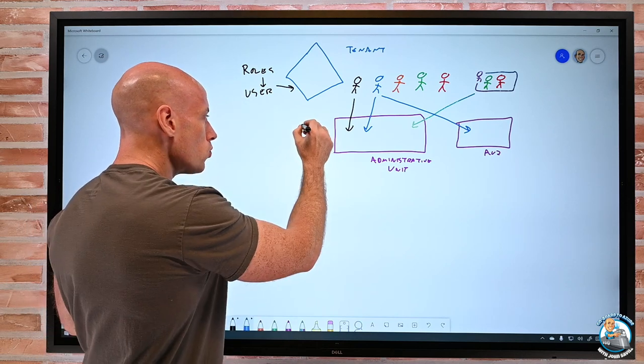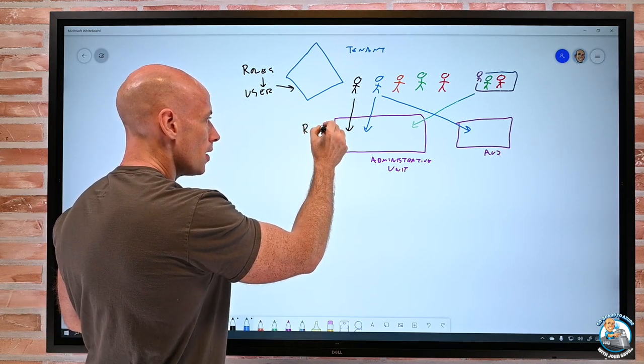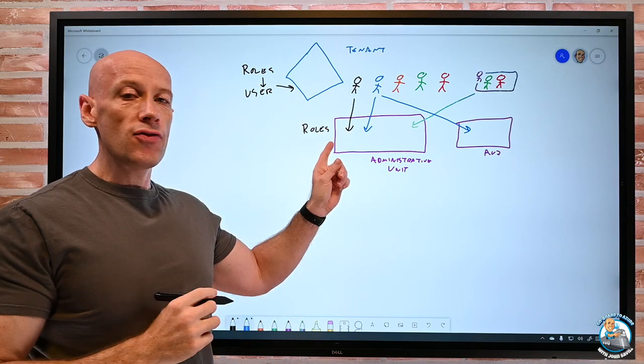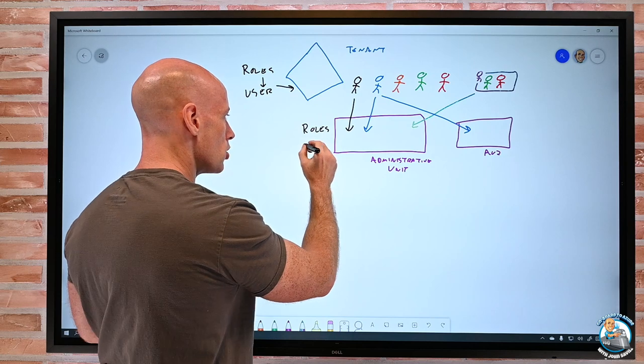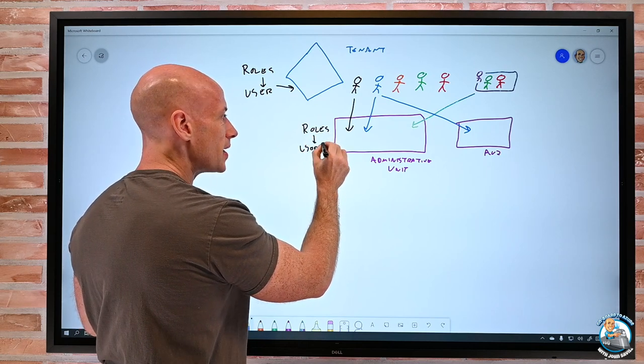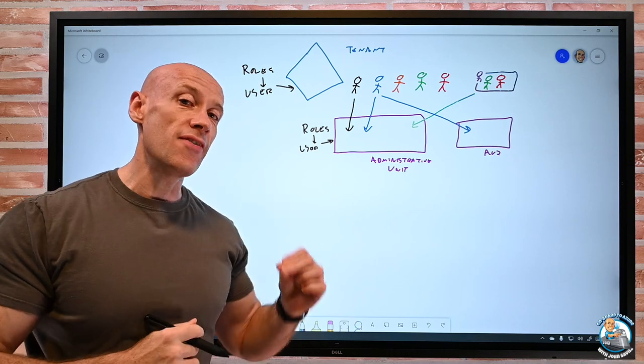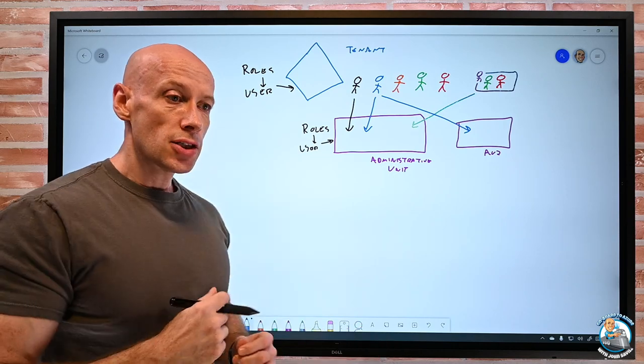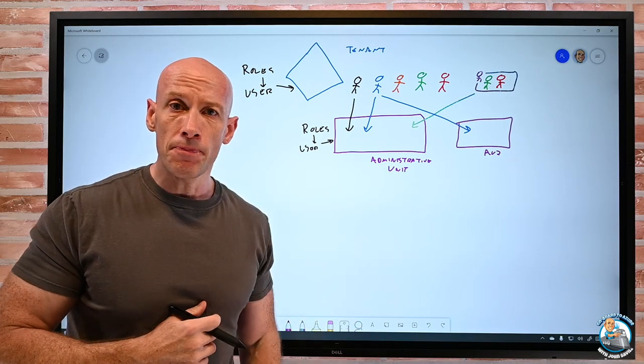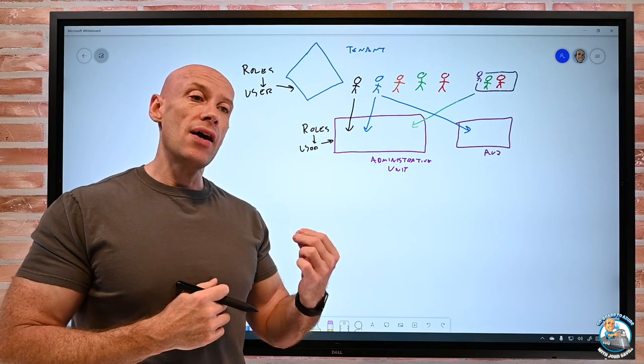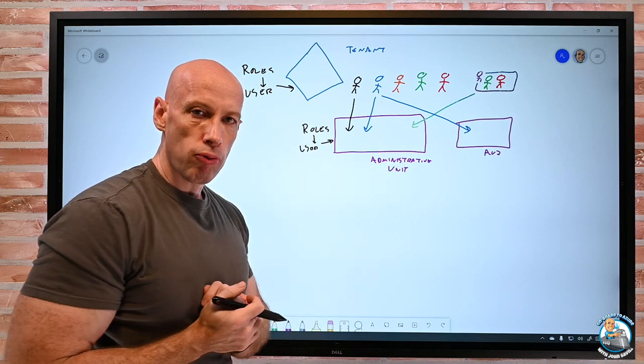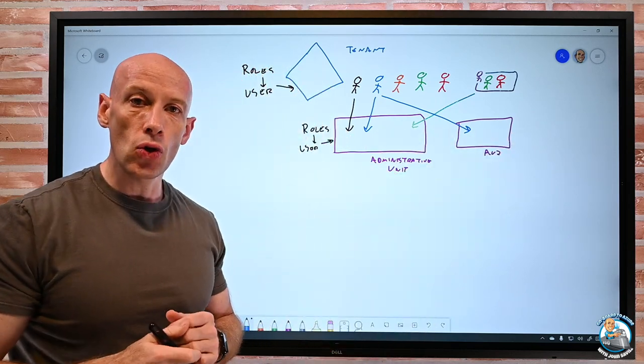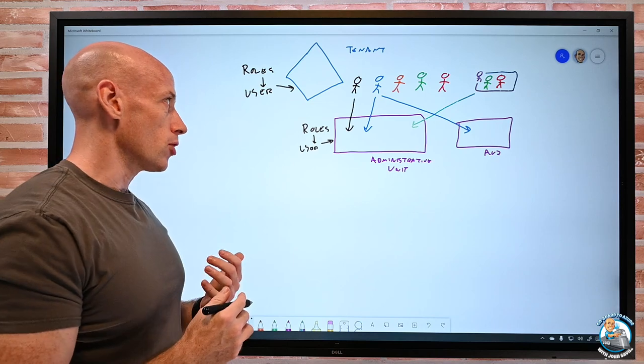But the point is, I've taken certain users and I could take groups as well and add them into an administrative unit. And there are then roles that I can apply at the administrative unit level. So, now I could give someone, a user, one of these roles, but it's now scoped at this specific administrative unit. So, you, branch manager, you can have the user admin role only for the people in your branch. Different branch manager, you can have it for your users.